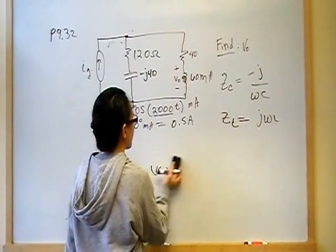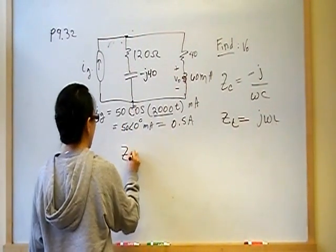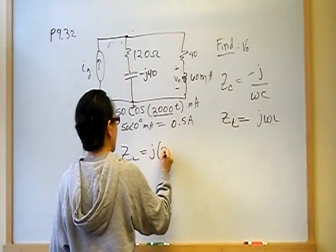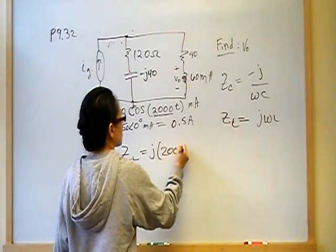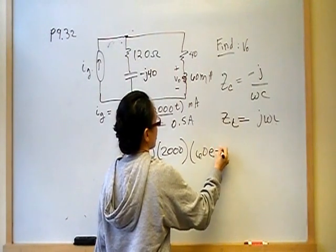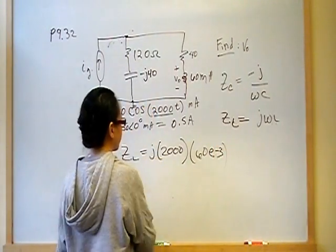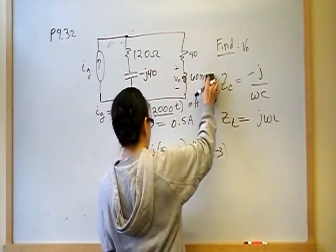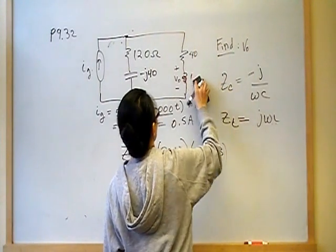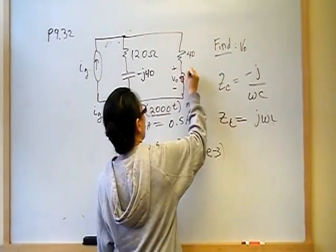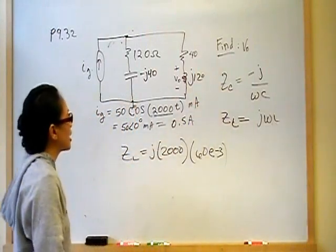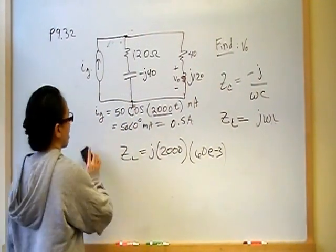The inductor impedance Z_L equals J omega L, where omega is 2000 and L is 60E-3. That gives us positive J120. Now we have everything converted to impedances and can apply KCL.